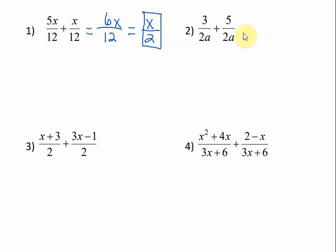For number 2, we have our denominator, and we just add the numerators. 3 plus 5 is 8, and that would reduce to 4 over 1, or this would just be 4 over a.